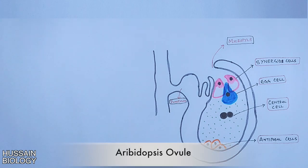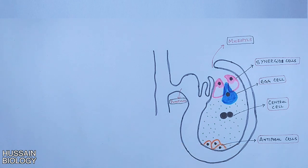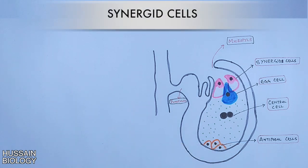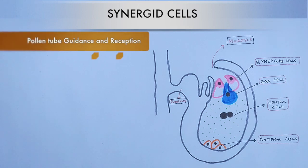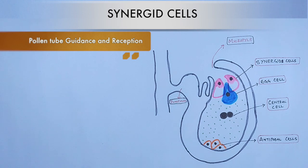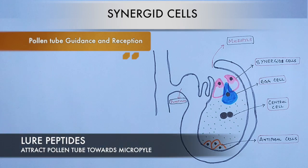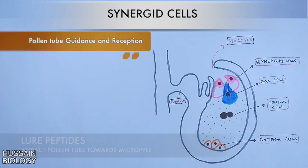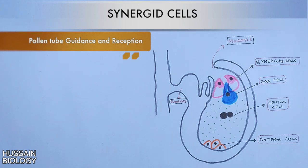Now let's see the functions of these different cells. First, synergid cells play a major role in pollen tube guidance. They release signaling molecules which attract the pollen tube towards the micropylar end — for example, synergid cells release LURE peptides which draw the pollen tube towards the micropyle. Other functions include pollen reception and pollen tube burst, which will be discussed in a different part of the video.